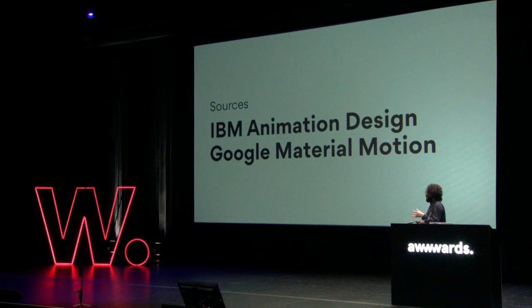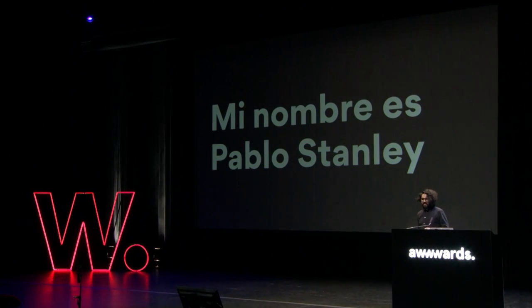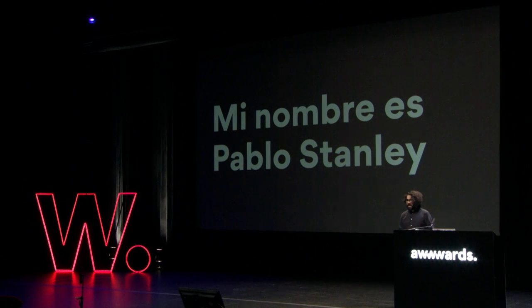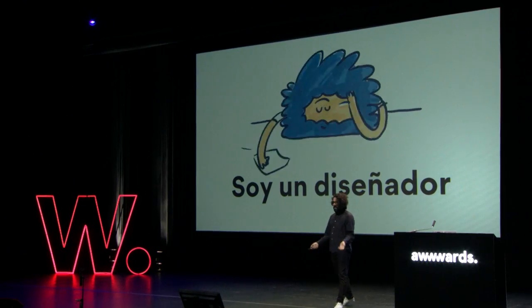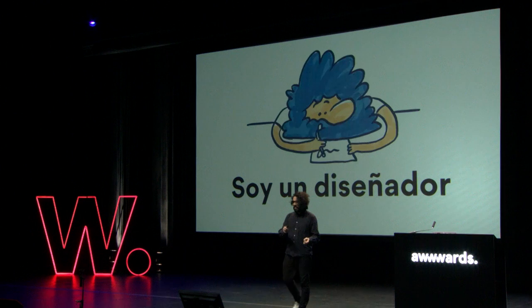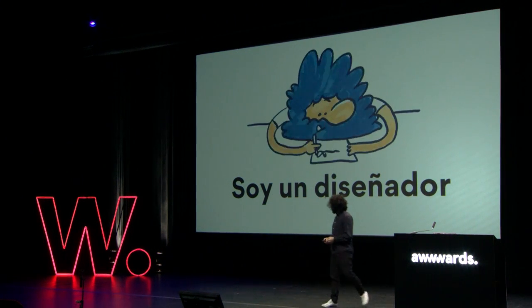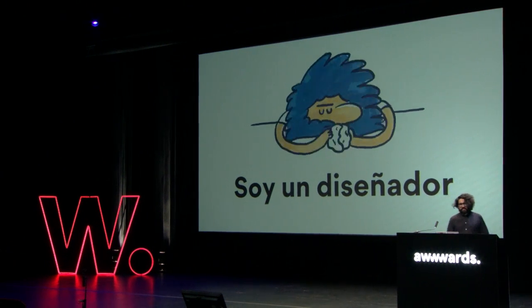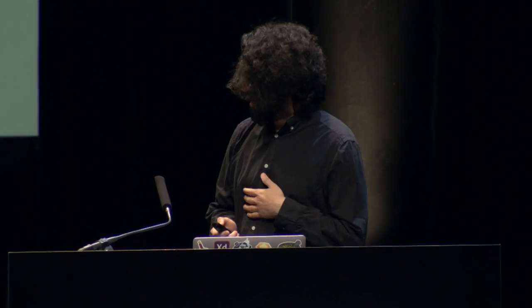Some of the sources for what I'm talking about come from smarter people than me — from IBM animation design and Google Material Motion. A lot of this is inspired by that. My name is Pablo Stanley. I didn't know there was going to be an introduction. I'm a designer — soy un diseñador. That means designer. So everybody say it: diseñador. That's a fancy way of saying designer, and it has the ñ from Español. So this is turning into a Spanish class.